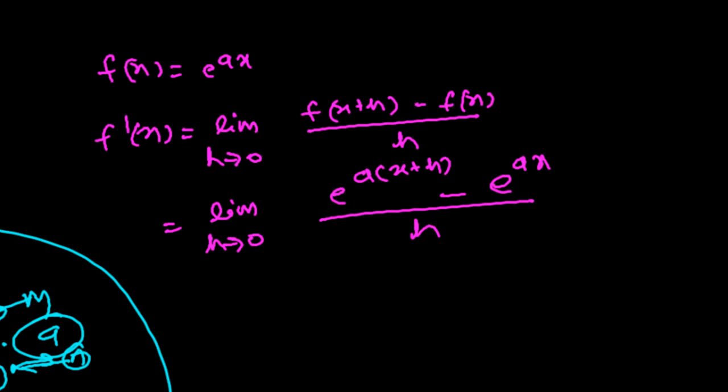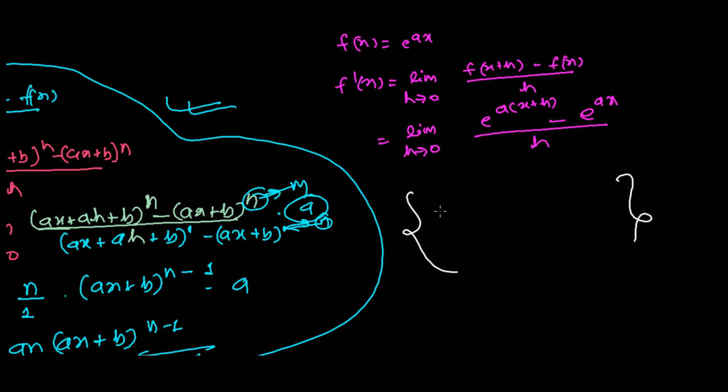Generally, we have to use a formula later on. So I'm first writing here: lim(x→0) [e^x - 1]/x = 1. This formula we may have to use somewhere, so I'm writing it first. Now again, lim(h→0), I'm trying to break it: [e^(ax+ah) - e^(ax)]/h.